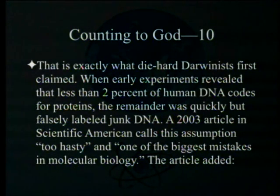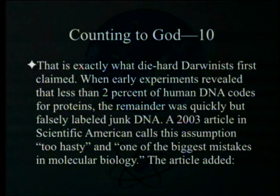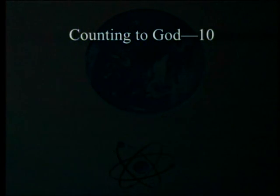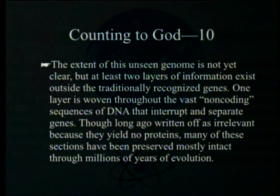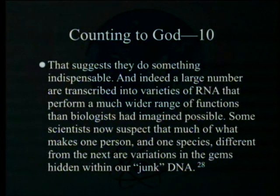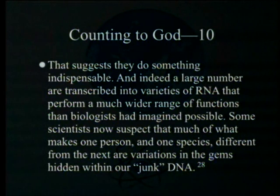That is exactly what die-hard Darwinists first claimed. When early experiments revealed that less than 2% of human DNA codes for proteins, the remainder was quickly but falsely labeled junk DNA. A 2003 article in Scientific American called this assumption too hasty and one of the biggest mistakes in molecular biology, noting that at least two layers of information exist outside traditionally recognized genes, and that many non-coding sequences are preserved through millions of years of evolution, suggesting they do something indispensable.